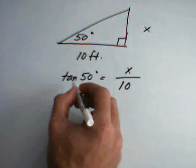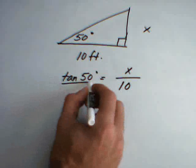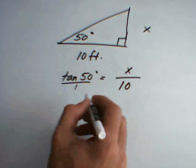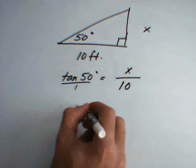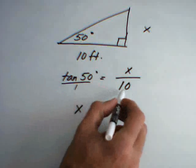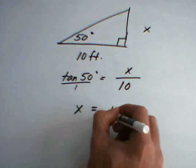Now, to solve for x, we'll treat this as a proportion where we're going to cross-multiply. And so, we get x times 1, or just x, is equal to 10 times the tangent of 50 degrees.